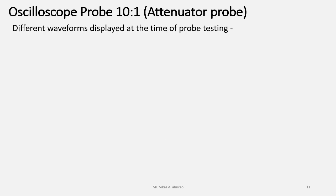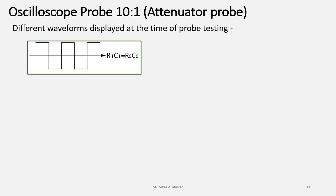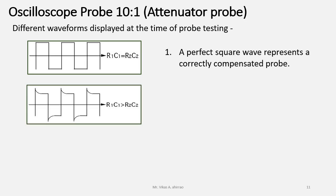Now, we know how to test a probe with the oscilloscope. Different waveforms are getting displayed at the time of probe testing. A perfect square wave will be obtained when R1 C1 is equal to R2 C2. A perfect square wave represents a correctly compensated attenuator probe.